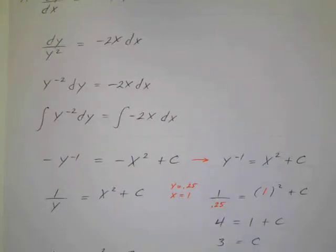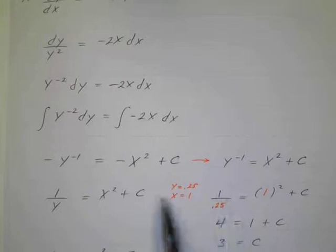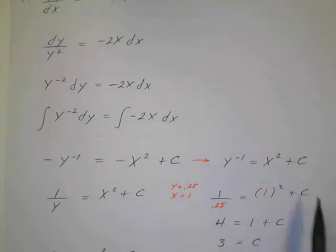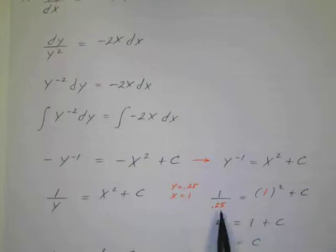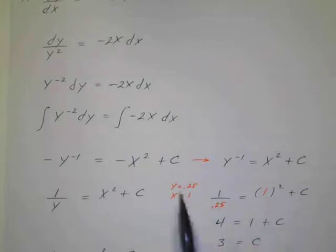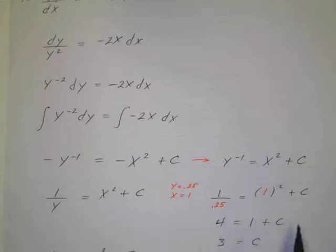So 1 over 0.25 is the given condition. This is 1 over y. This is y. Equals x squared, 1 squared plus c. So when y is 0.25, x is 1. So it should satisfy this equation. 0.25 goes into 1 4 times, so 1 squared is 1. So I've got 4 equals 1 plus c. Subtract 1 from both sides. 3 equals c.